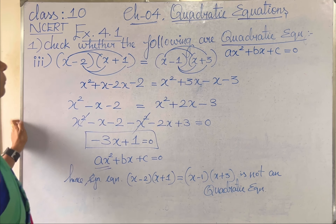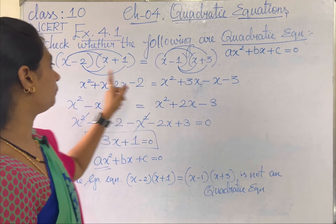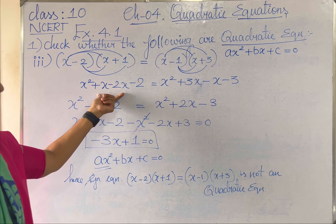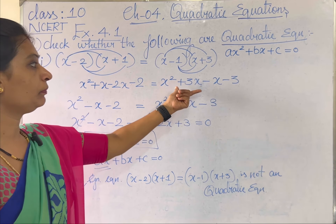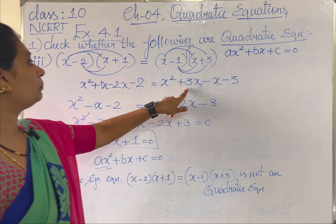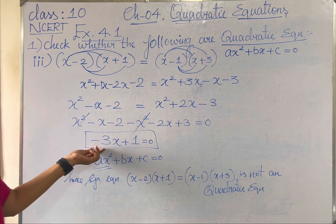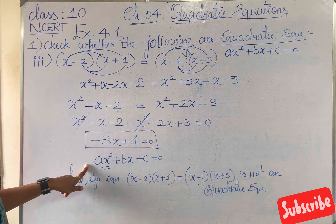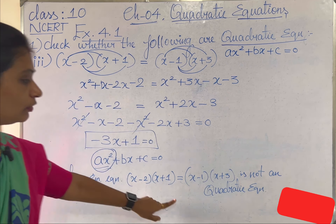To summarize: we multiplied both sides, simplified like terms on the left and right hand sides, then brought all terms to one side. The x² terms cancelled, leaving minus 3x plus 1 equal to 0. Since the equation does not satisfy the general form ax² plus bx plus c equal to 0, as the x² term is missing, we conclude the given equation is not a quadratic equation.